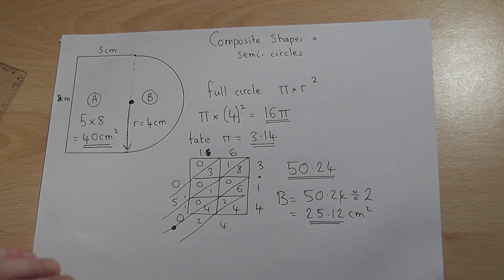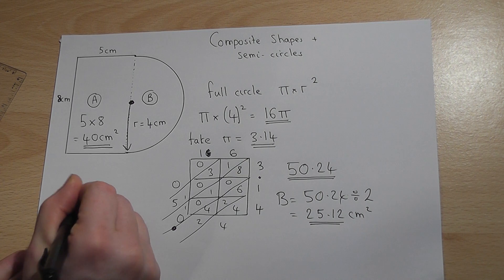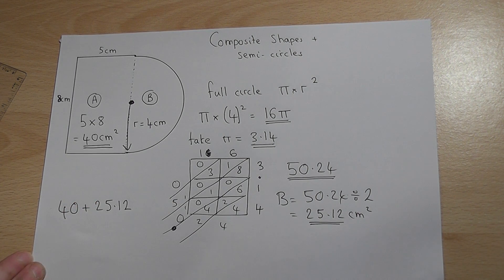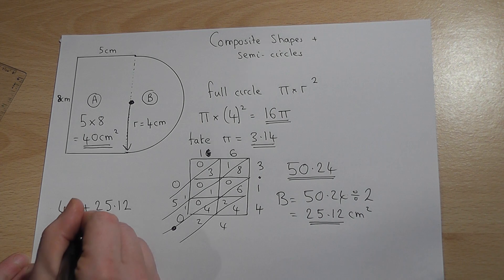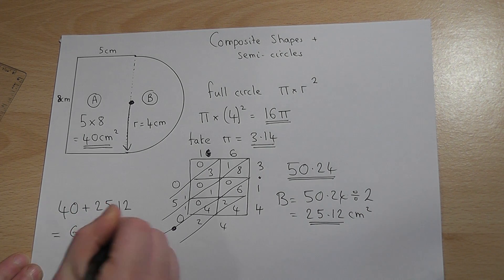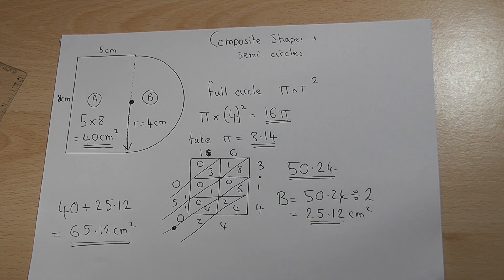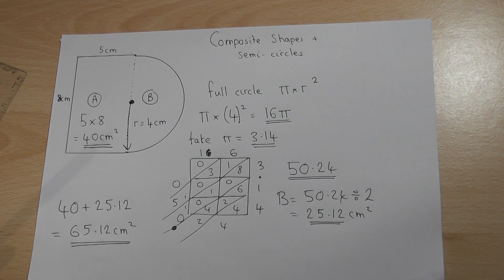So we have shape A which is 40, we have shape B which is 25.12, so the total area equals 65.12 centimeters squared and that is the total area of the composite shape.